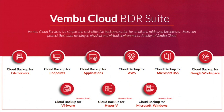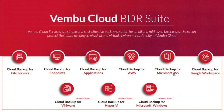With Rainbow Cloud BDR Suite, you back up data from your target machine and send it directly to Rainbow Cloud. Once you back up, the data is available for restore from anywhere, at any time. Currently available features include cloud backup for file servers, endpoints, applications, AWS EC2 instances, and SaaS applications like Microsoft 365 and Google Workspace. VMware, Hyper-V, and Microsoft Windows backup will also be available soon.